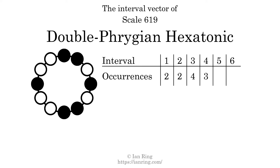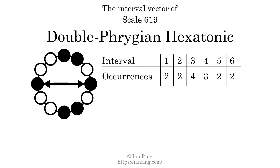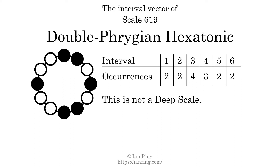There are 3 intervals with the size of 4 semitones. There are 2 intervals with the size of 5 semitones. There are 2 intervals with a size of 6 semitones. Each interval does not appear in this scale a unique number of times, so this is not a deep scale.